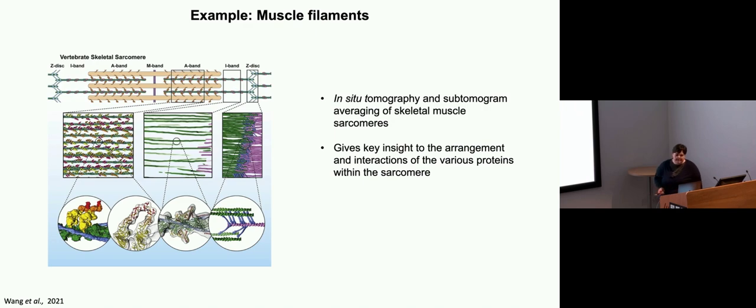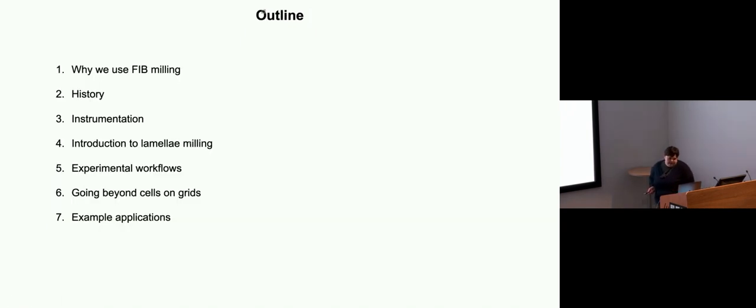Another example of this are these skeletal muscle sarcomeres. This wasn't as high resolution as the ribosome, but was still fairly high resolution for this kind of work. But again, there are lots of examples out there now, but I think this is one of the nice ones that really highlights why we do this because it gave very good insight into how the different proteins interact and arrange inside the muscle filaments.